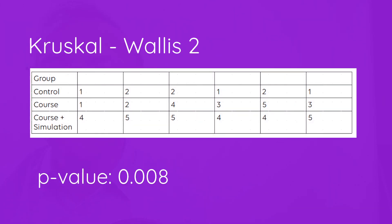Here we get a p-value of 0.008. The Kruskal-Wallis Test functions very similarly to how we use ANOVA for parametric data. This small p-value tells us there are differences between the groups — that which group you're in does have an effect on your median Likert score. It does not, however, tell you which group is the best, so the researcher will have to work through additional tests to determine which group performed best.